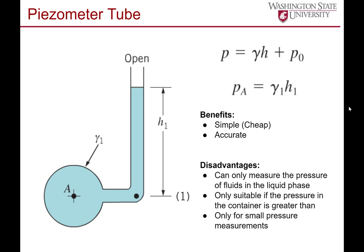The pressure equation is P equals gamma H plus P naught, where P naught is atmospheric pressure. For gauge pressure, PA equals gamma 1 times H. This is an extremely simple device, but you can only fill it with liquid. If it was gas, that gas would just escape into the atmosphere, so it can only be used for liquids and only for small pressure measurements.